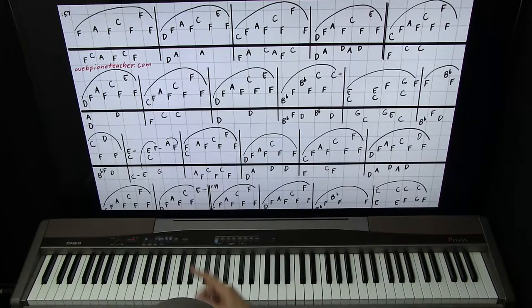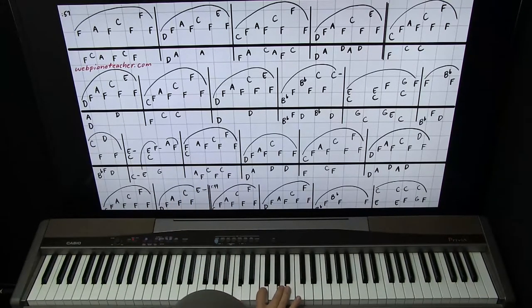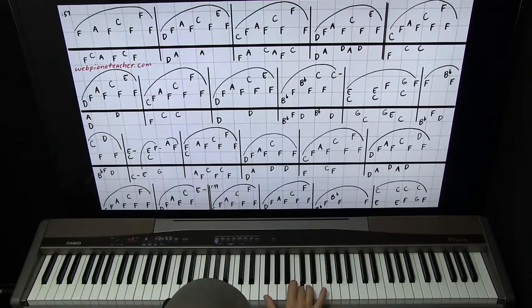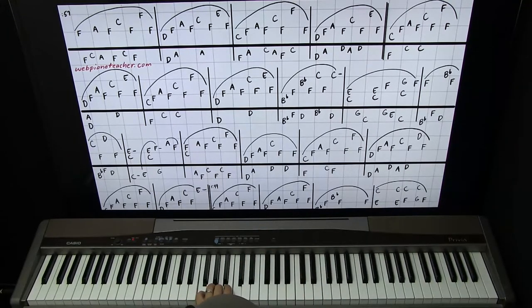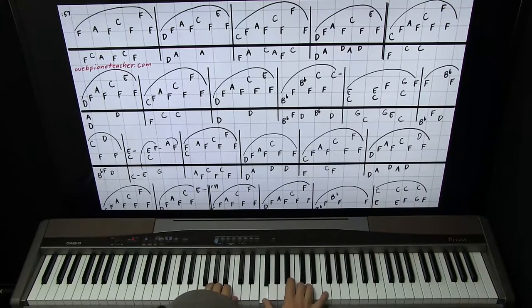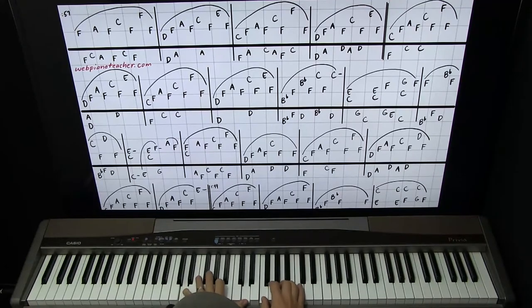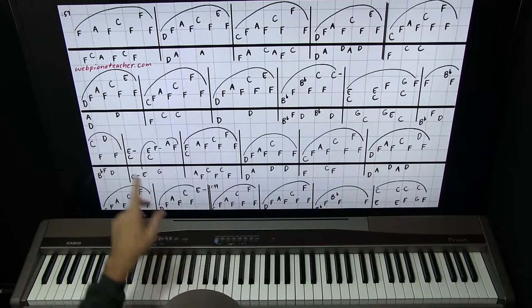Very similar to the first measure but not exactly. C-F-A-F, but on this F you need to put your thumb on it so that you can play the rest of the measure: C-F-F-F. Left hand is still on F-A-C. The next measure is D-F-A-F-C-F-E-F, just like the second measure was. Left hand D-A-E-A-D. Very neat.